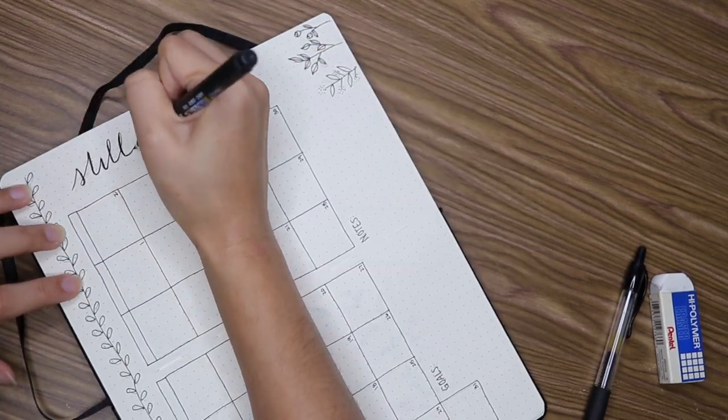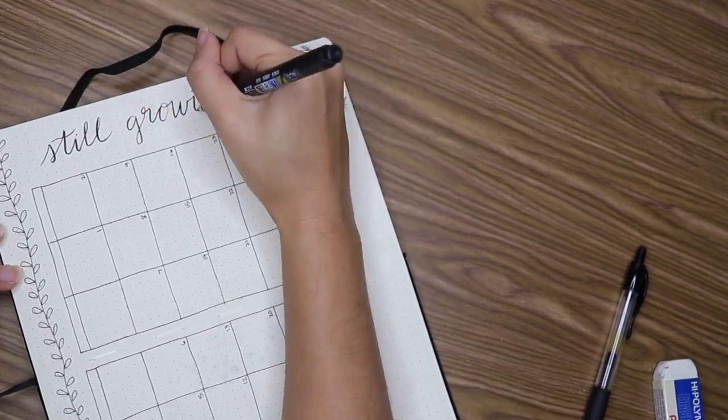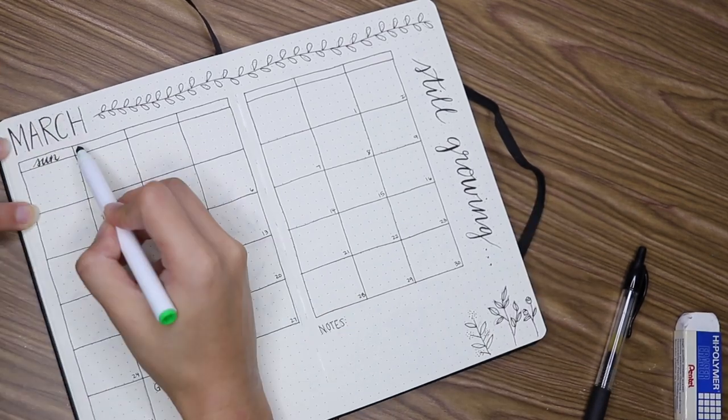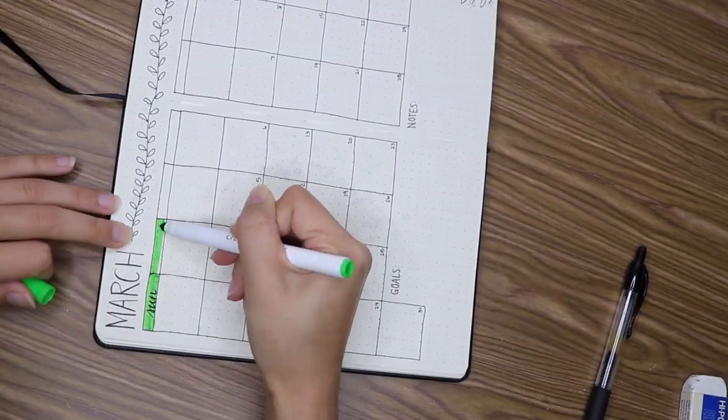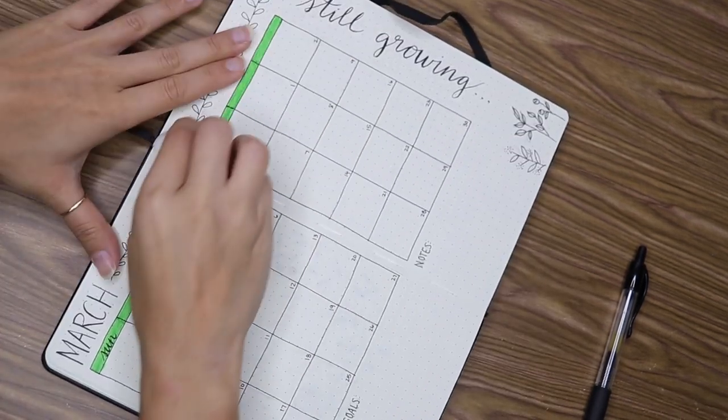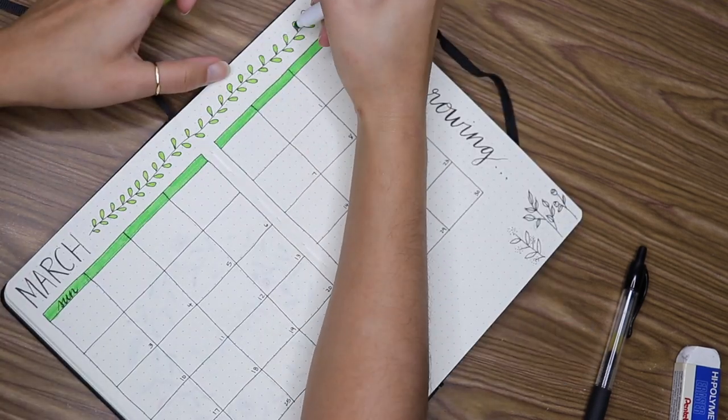And I also left room at the bottom for me to write down my goals for the month and any notes that I need to jot down. In the bottom right corner I added more flowers slash leaf doodles, very random ones again. And on the right hand side I wrote a little saying that says 'Still growing dot dot dot' because I feel like I needed to remind myself that I am still growing every day as a person, just trying to better myself.